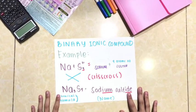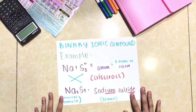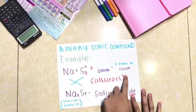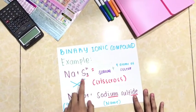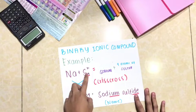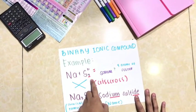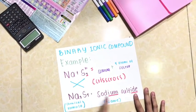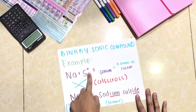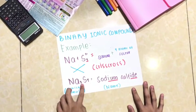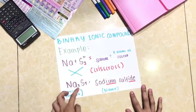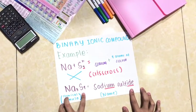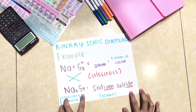For an example of a binary ionic compound, we have sodium represented by Na and sulfur represented by S. Sulfur has a superscript of 3 and sodium has a superscript of 4, referring to the atoms. When we do the criss-cross, the superscript of sulfur becomes the subscript of sodium, giving us Na3S4, which equals sodium sulfide.